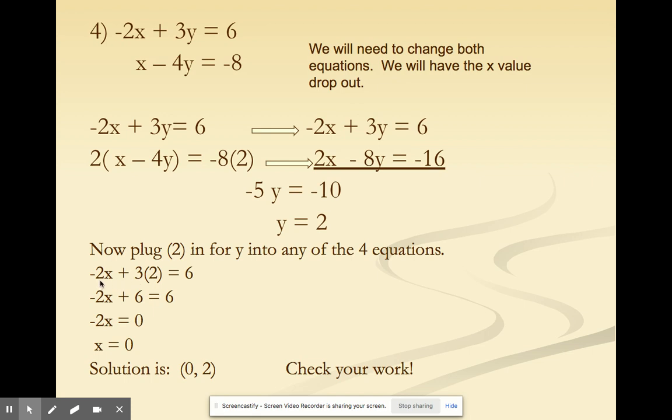So, negative 2x plus 3 times 2 equals 6. Now, originally it was 3y, but because y is 2, I just substituted it out. 3 times 2 is going to give us 6. Subtract 6 on both sides, that gives us 0. Divide by negative 2 to get x isolated, and x is going to be 0, so your final answer will be 0 comma 2.